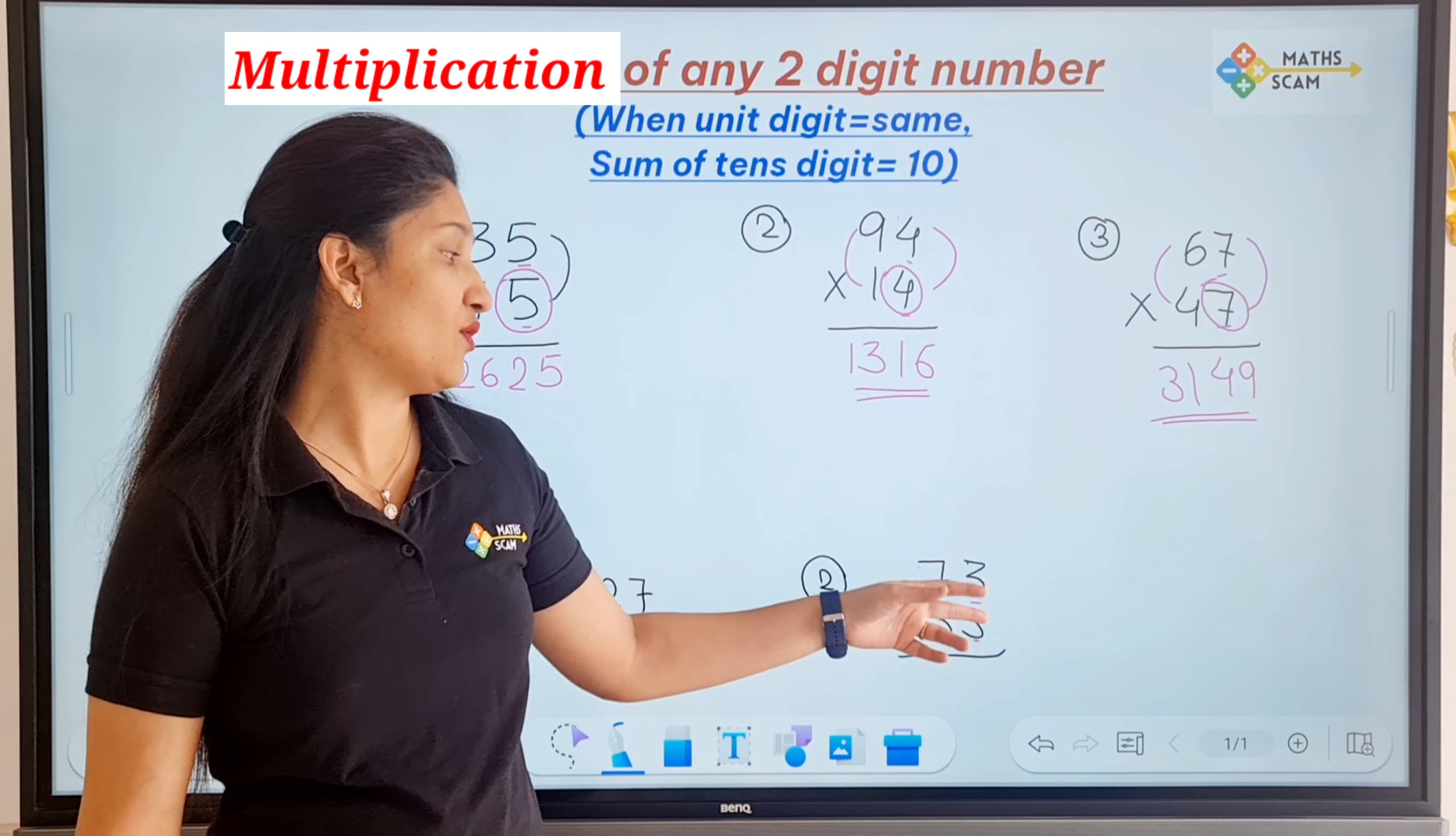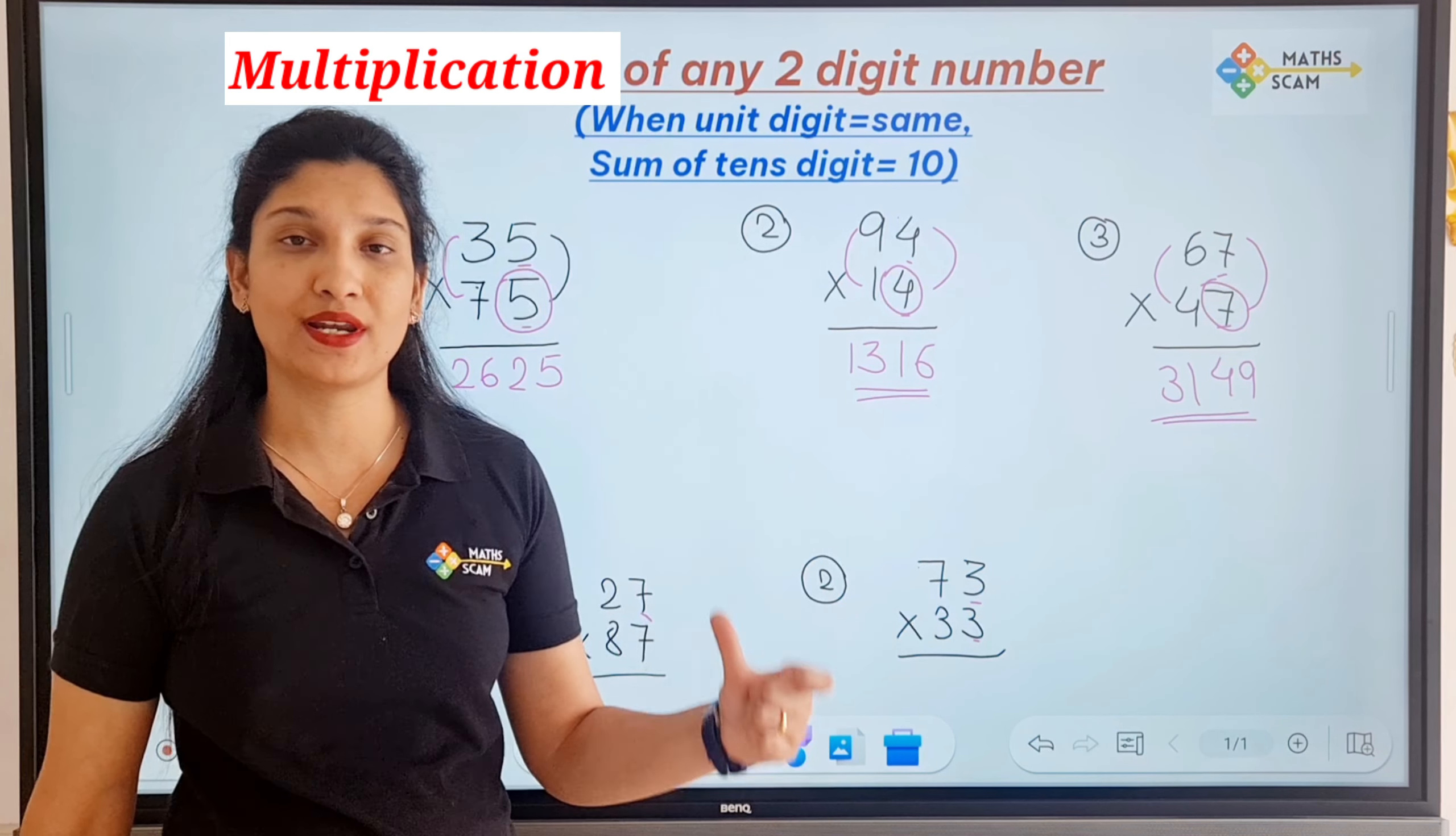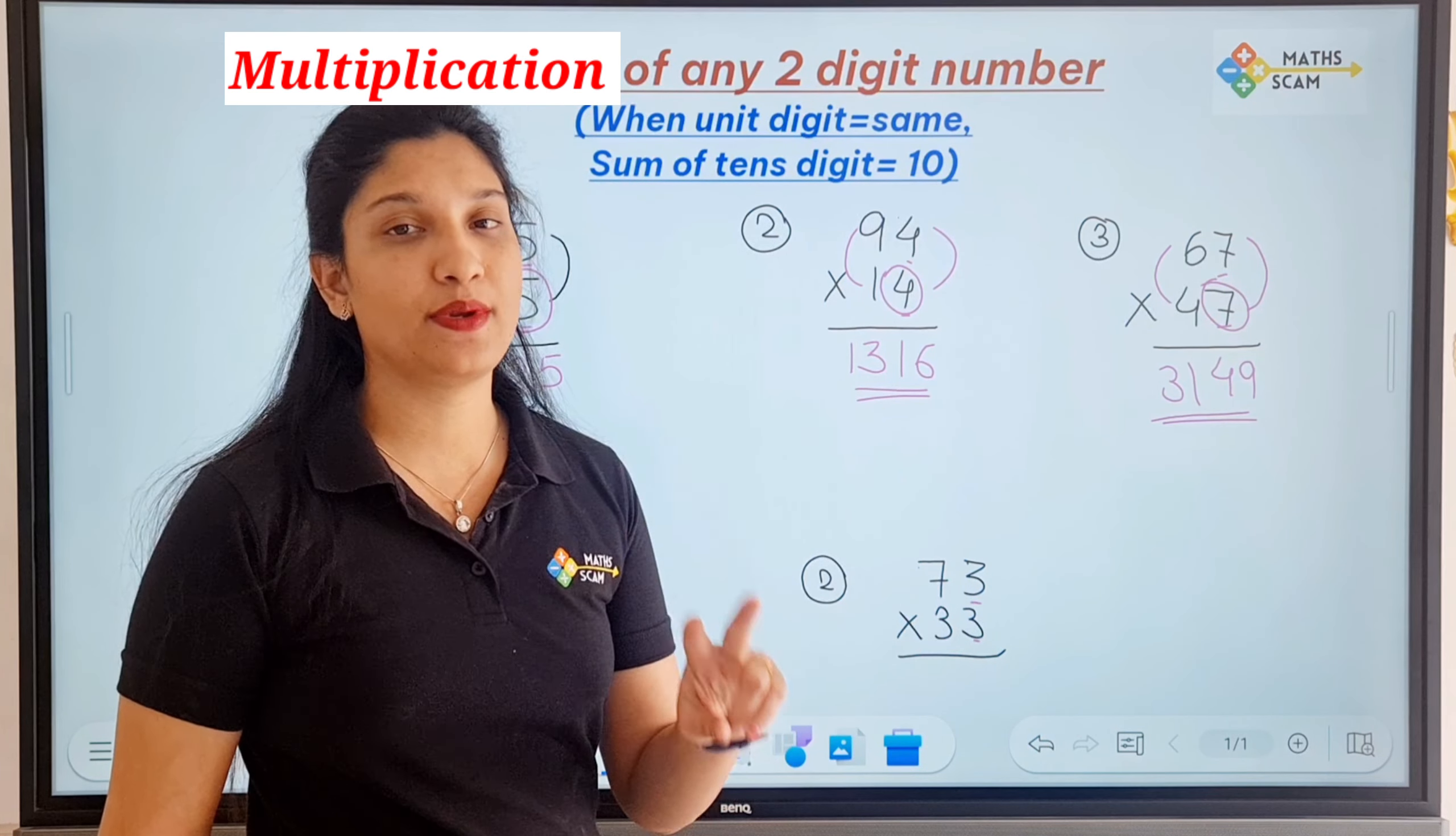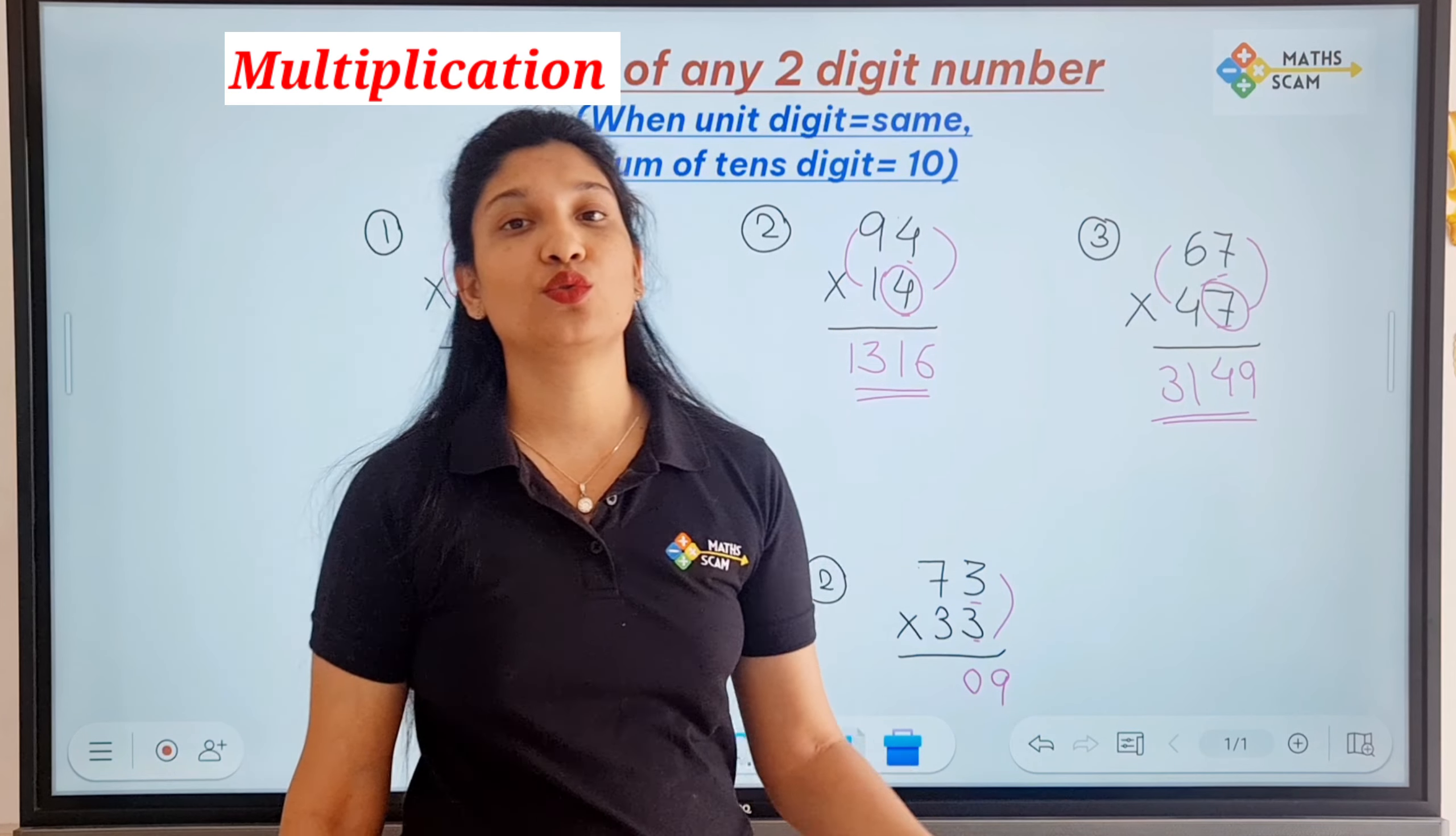Let's see, this question is 33 times 83. 3 times 3 is 9, okay? But 9 is a single digit number. So you always write the number in two digits. In Vedic maths, if you write the number in two digits, you write it as 09.